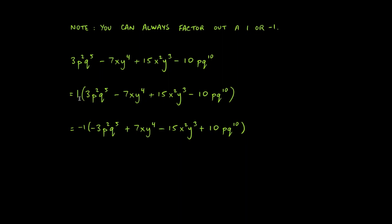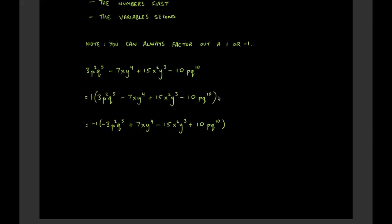Alternatively, we're allowed to factor out a negative one. When we do that, all the signs inside the parentheses flip, because distributing must return us to the original expression. A positive term like 3p²q⁵ becomes negative, and a negative term like −7xy⁴ turns positive. I'm introducing this trick here because we'll use it frequently in the future.